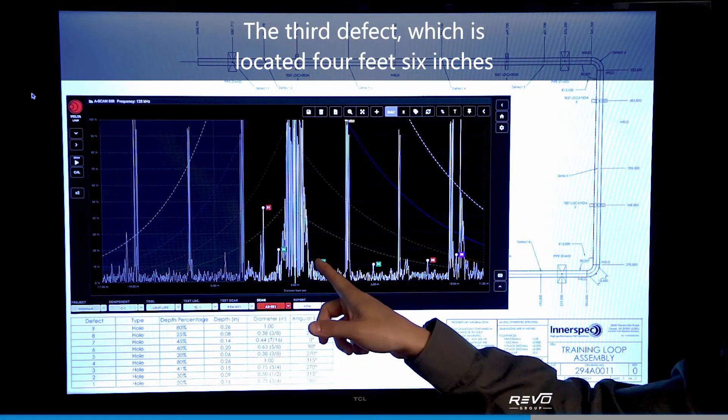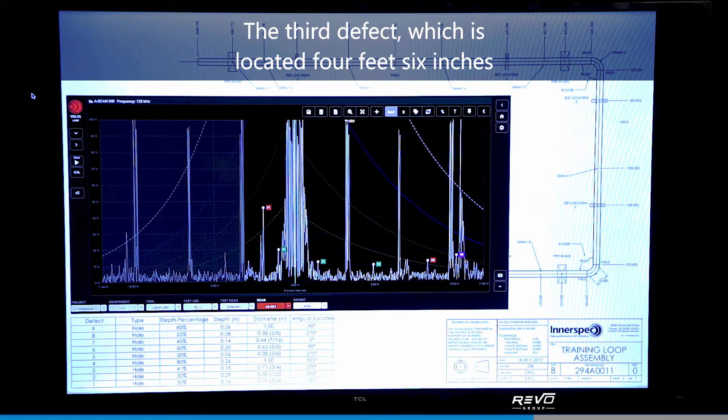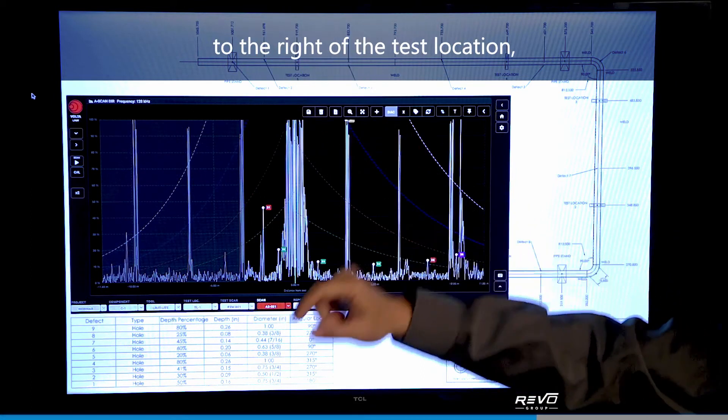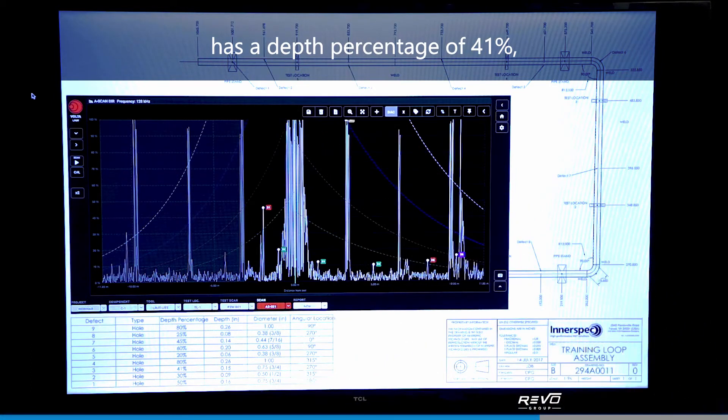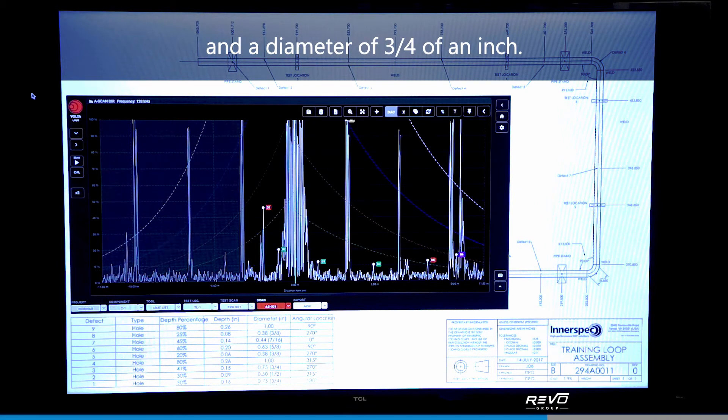The third defect which is located 4 feet 6 inches to the right of the test location has a depth percentage of 41% and a diameter of 3 quarters of an inch.